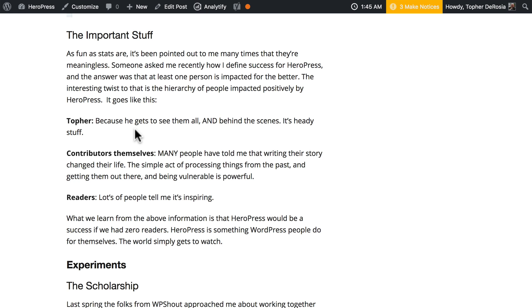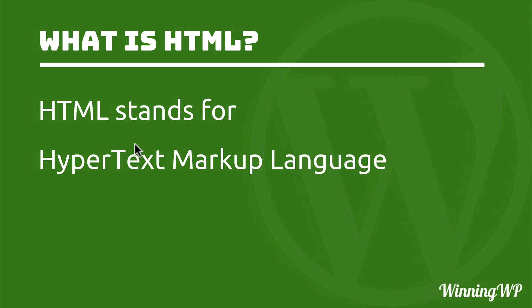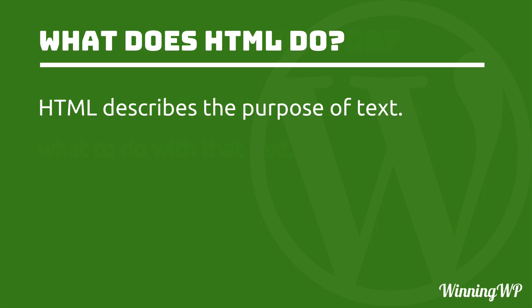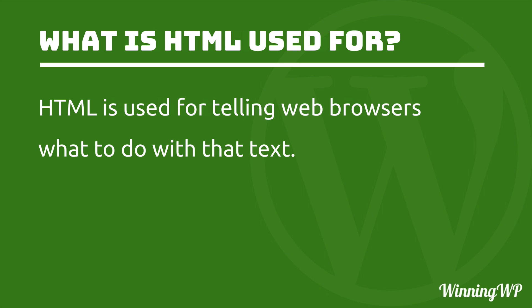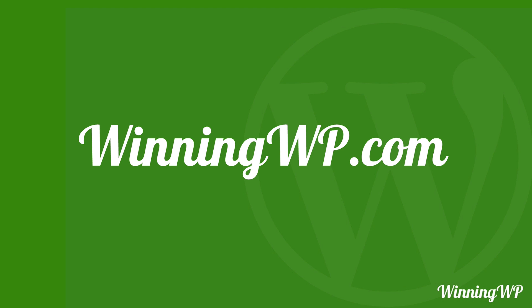Let's review what we've learned so far. HTML stands for Hypertext Markup Language, and that means it's a language intended to mark up normal English into hypertext. Originally hypertext simply meant that you could click it, but now it means all sorts of things like declaring headers, tables, and images. HTML describes the purpose of text, then it's up to the web browser to know what to do with that text. If you'd like to learn more about WordPress, check out WinningWP.com.